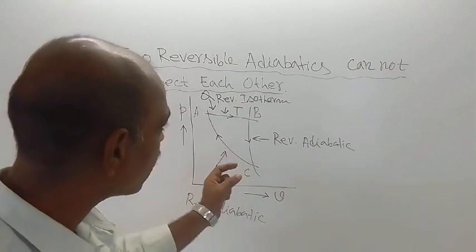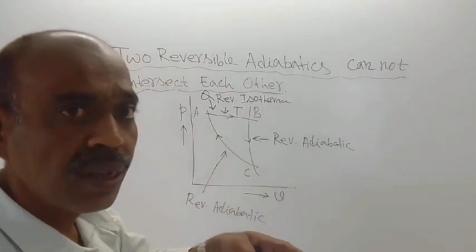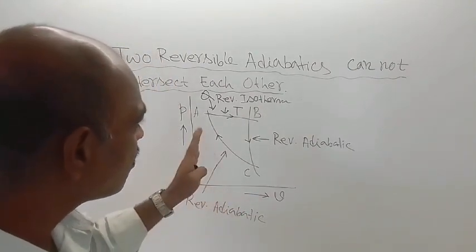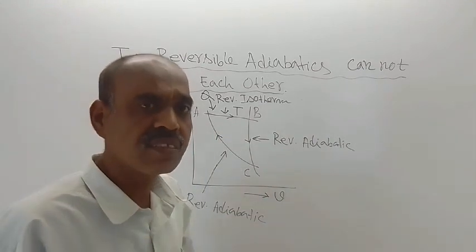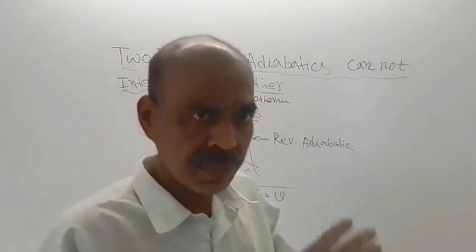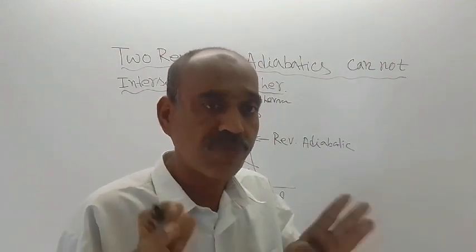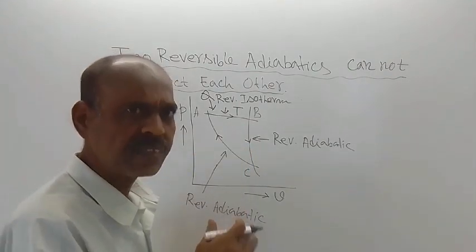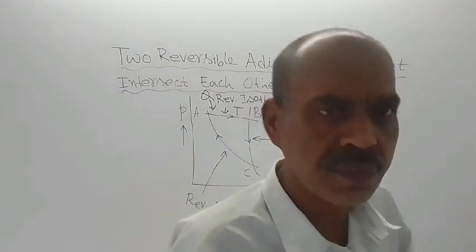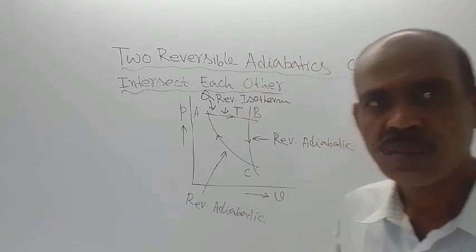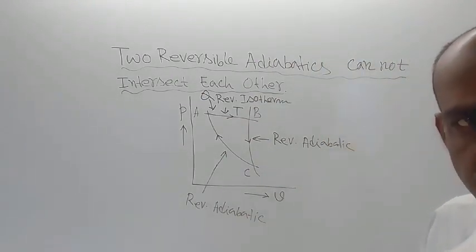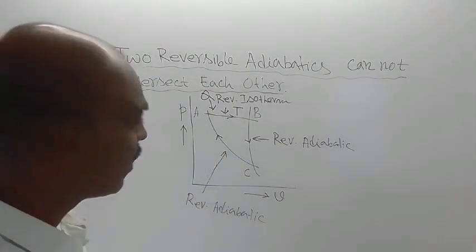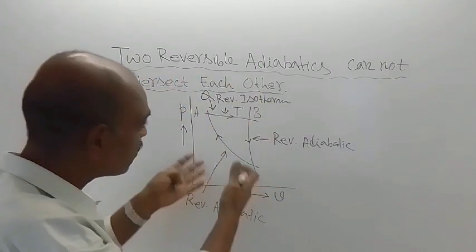There is no thermal energy reservoir where heat is going from the system — that is totally absent. So this is violating one law: Kelvin-Planck's statement of the second law of thermodynamics is being violated. Violation of Kelvin-Planck's statement is not possible.